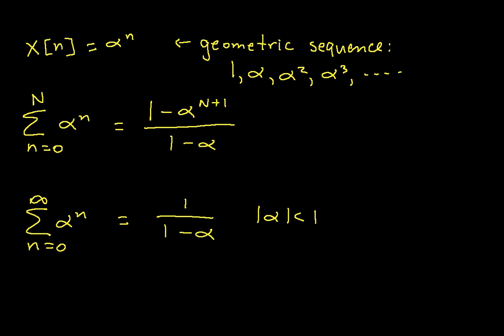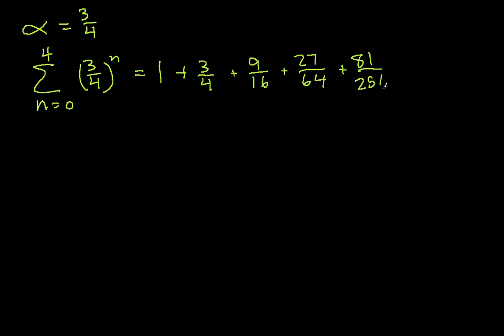For the example, let's bring up an empty window. Why don't we look at the case where alpha is 3 fourths. And suppose I want to find the sum n going from 0 to 4. So in this case, cap N would be 4 of 3 fourths raised to the nth power. Now this one I could actually just write out. If you're unfamiliar with summation notation, this is what it means: 3 fourths to the 0, 3 fourths to the 1, 3 fourths squared, 3 fourths cubed, and 3 fourths to the fourth.